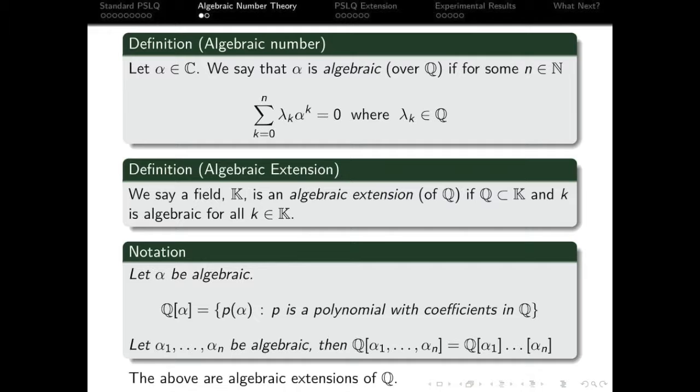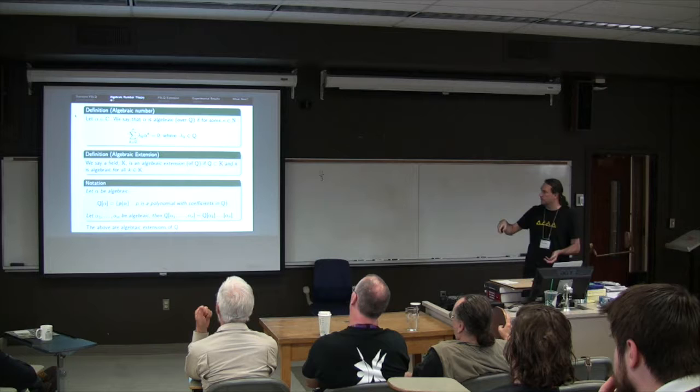If we have a complex number, we say that it's algebraic over Q if it's the zero of some polynomial with elements in Q. Fairly standard. An algebraic extension field is just a field for which Q is a subfield for which every element of the extension field K is algebraic in Q.